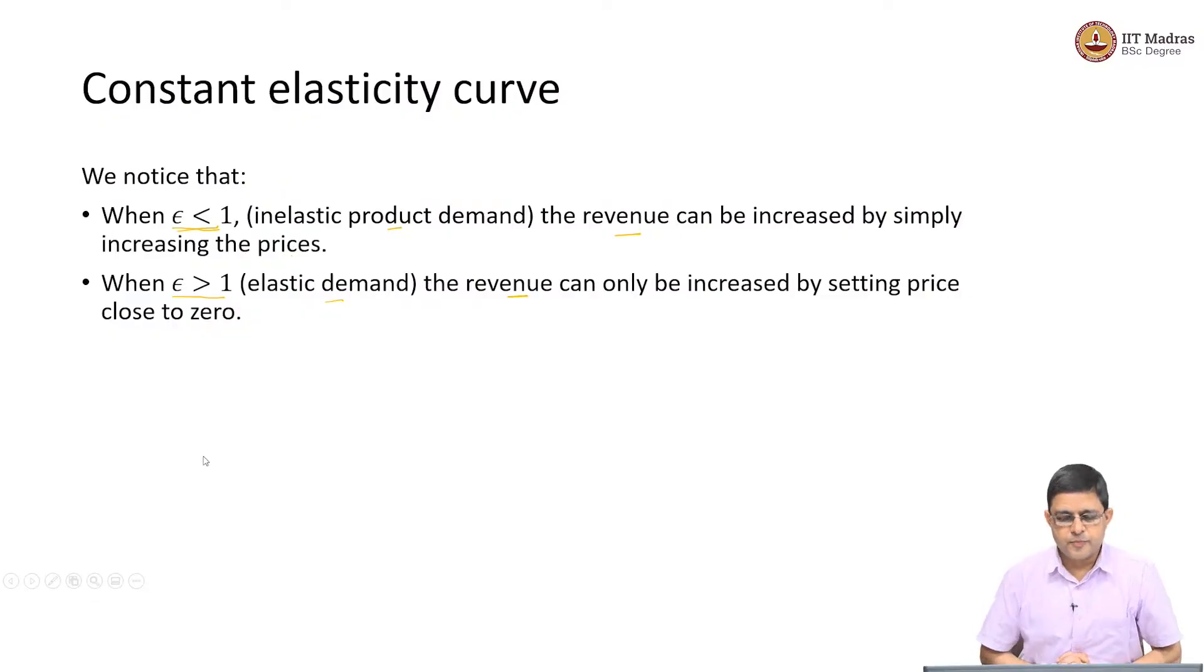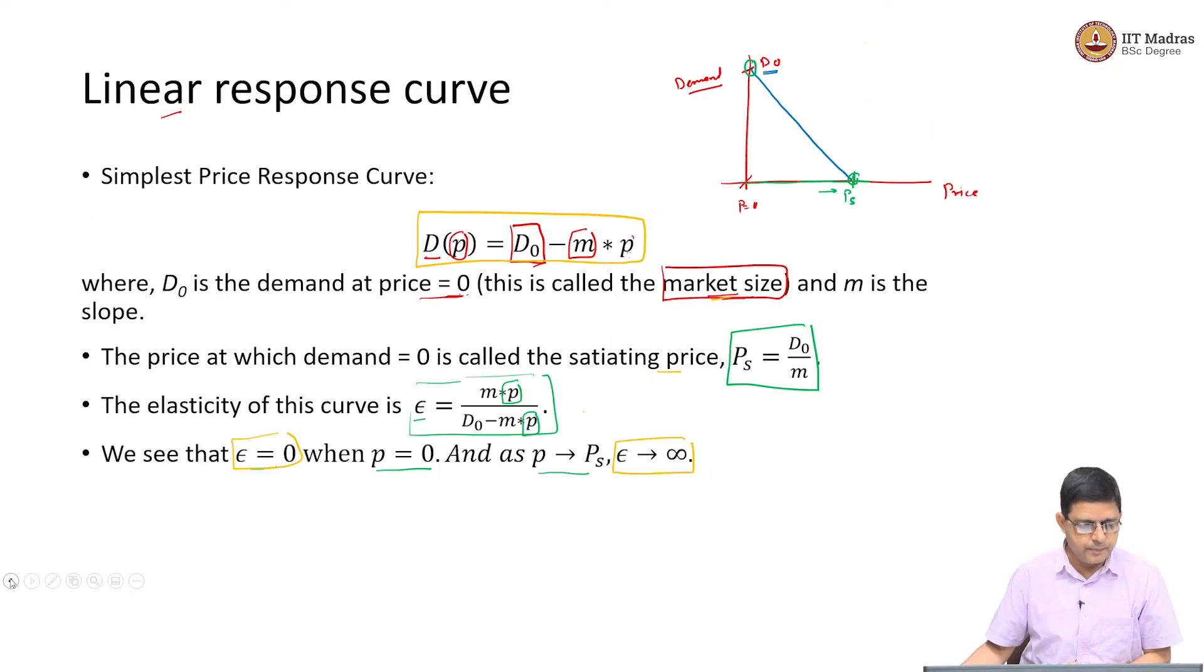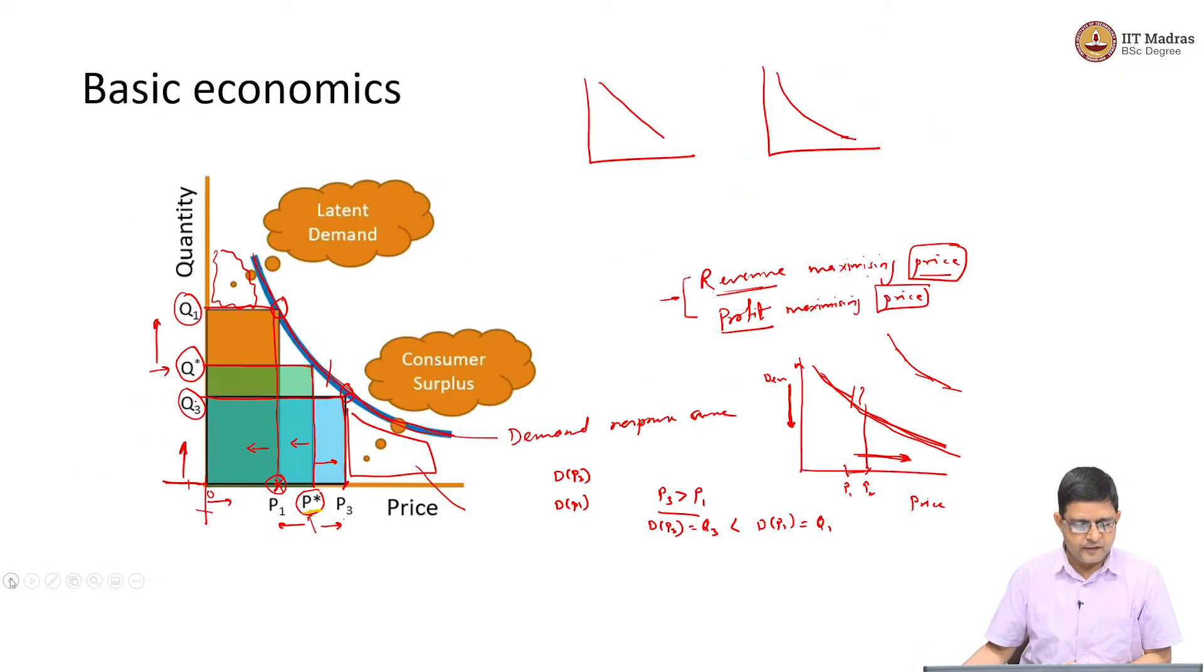Welcome back to the session on Demand Response Curve. We were looking at the relationship between price and demand. In the last session, we saw the relationship to have four properties: non-negativity, downward sloping, continuity, and differentiability.